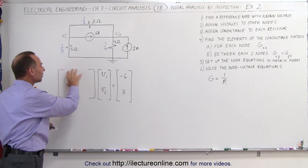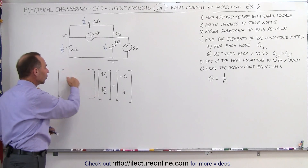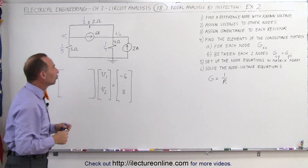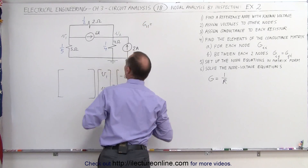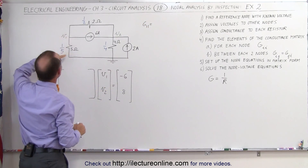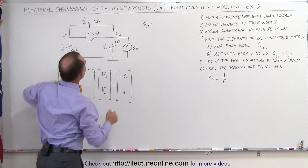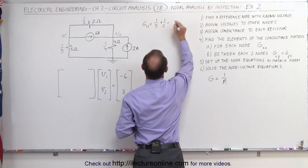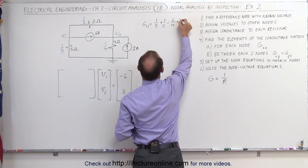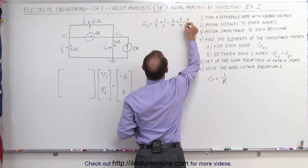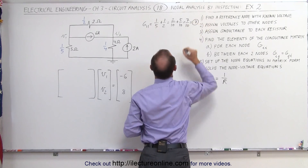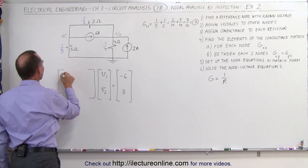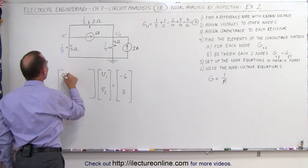We still need to find the conductance matrix elements. The diagonal elements are the sum of the conductances connected directly to each node. G11 is the sum of all conductances directly connected to node 1: 1 over 5 plus 1 over 2. The common denominator is 10, giving 2 over 10 plus 5 over 10, which is 7 over 10, or 0.7.